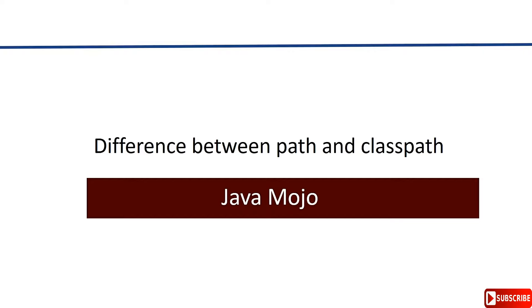Hi guys, this is Venkat Reddy, you are watching Java Mojo. In this video we are going to see the differences between PATH and CLASSPATH. In our previous tutorial we have seen how to install Java on Windows. As part of that video I explained that to compile and run a Java program we need to set PATH and CLASSPATH. Now there might be a question in your mind: what is PATH and CLASSPATH, and why do we need to set them?